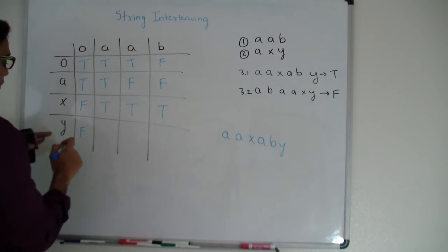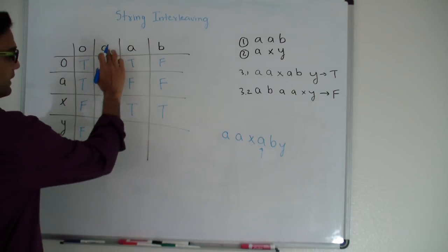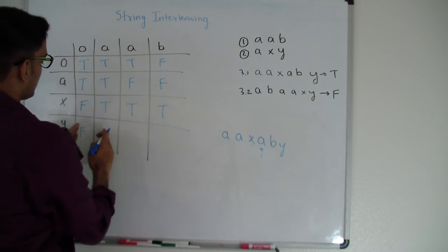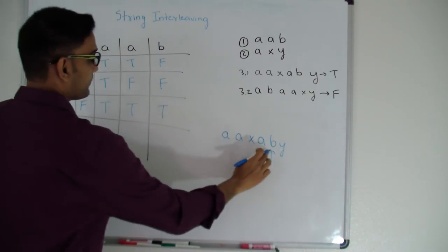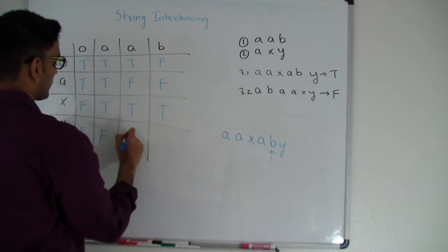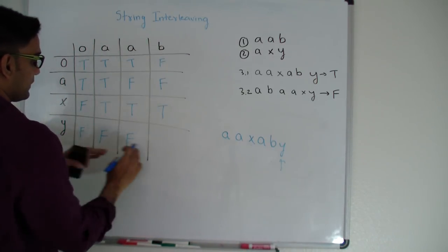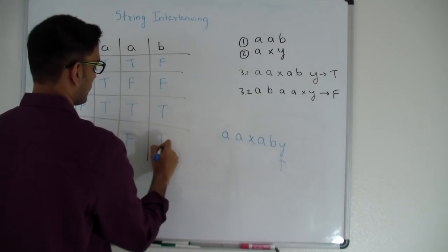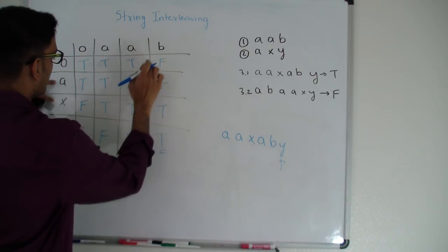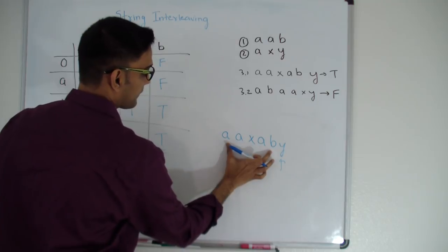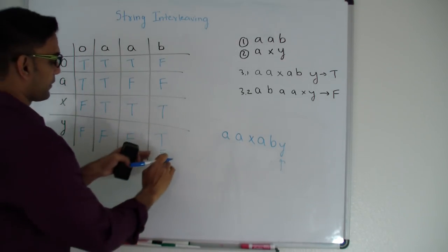Let's fill up the last row. Looking at the fourth character: is this 'a' same as 'y' or 'a'? It is same as 'a', but is the guy to the left true? No, so this is false. Is 'b' same as 'a' or 'y'? No, so this is false. Now looking at 'y': is this 'y' same as either option? It's same as 'y'. Is the guy on top of me true? It is, so this is also true. Since 'ax' and 'aab' make up the first five characters of this string as an interleaving, and this 'y' matches this 'y', it continues to form the interleaving — which is why this is true.